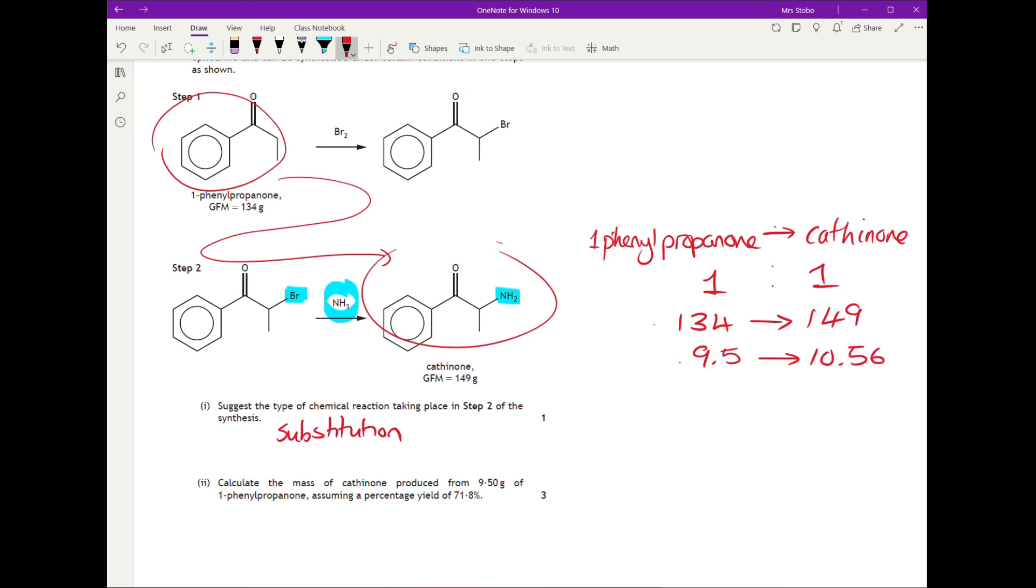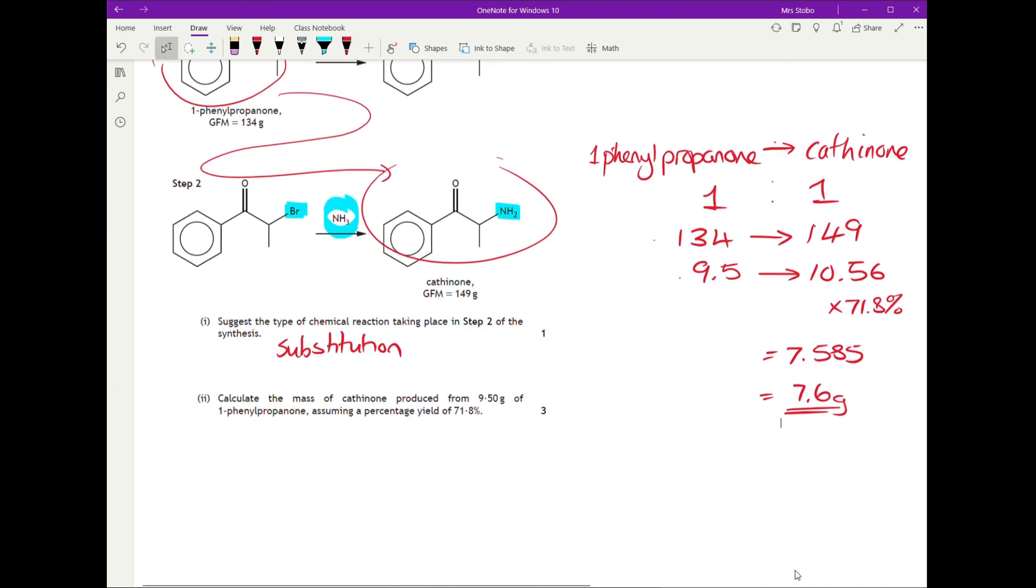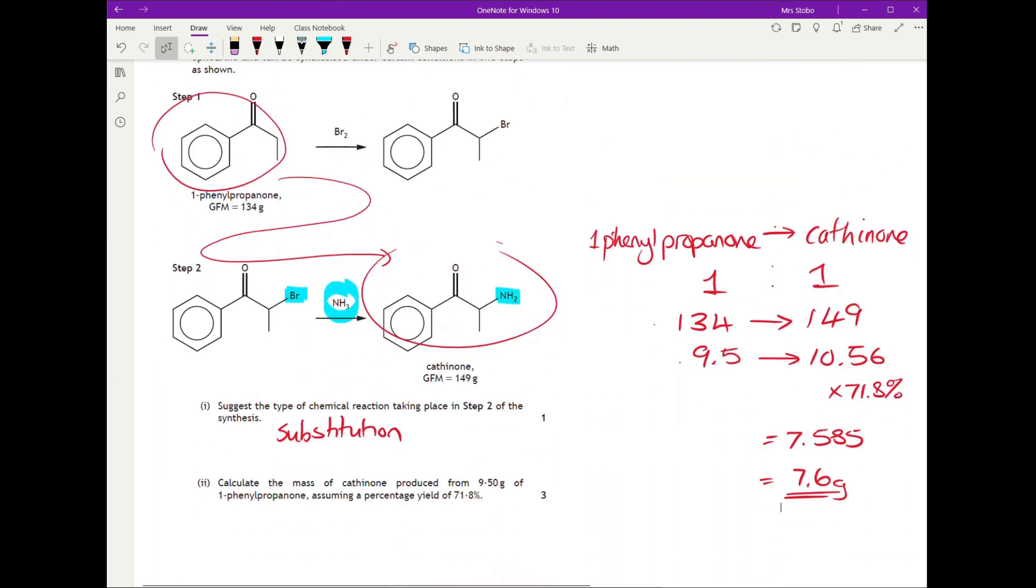Now that's at 100%. I don't want 100%. I want 71.8%. So multiply it, obviously not by 71.8, but by 0.718. And that gives you 7.585, which they were accepting. I personally would have taken it to that, which is also what they had as their final answer. It's not quite a gift, but for three marks, that's quite nice.